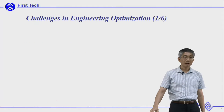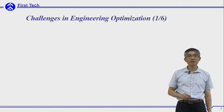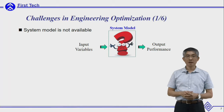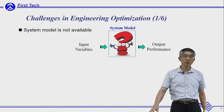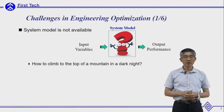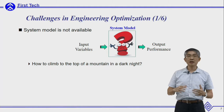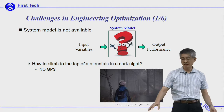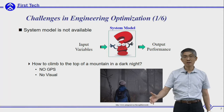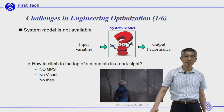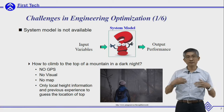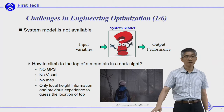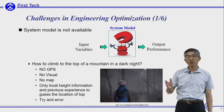This is a very typical design optimization problem. The weight of the bridge is well defined. However, in typical engineering optimization there are several challenges. The first is that the model is not always available — you don't know the numerical models, so you have to use experiments to find the relationship. It's like climbing a mountain in the dark with no GPS, no map, and very limited visual information.